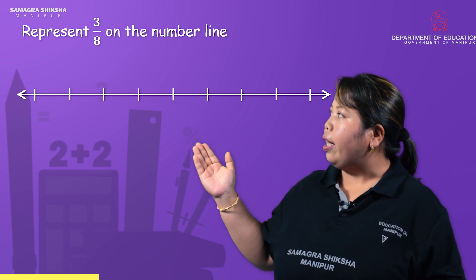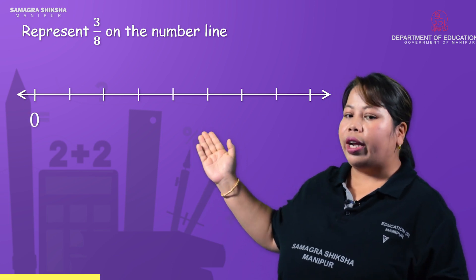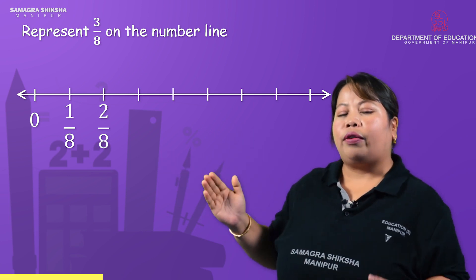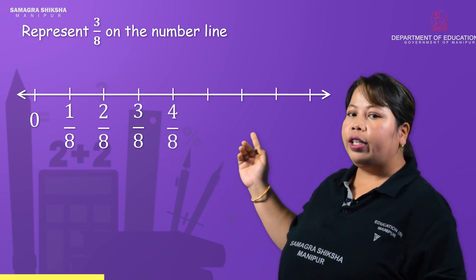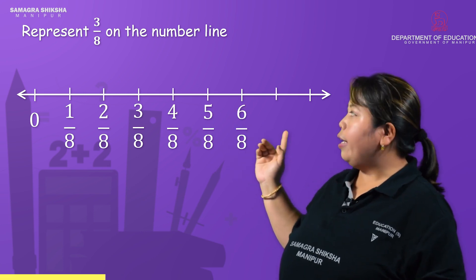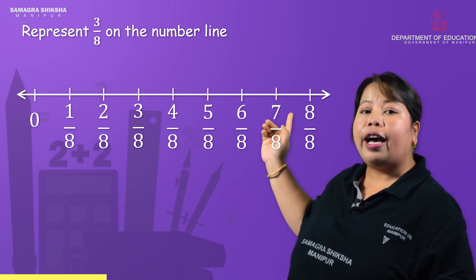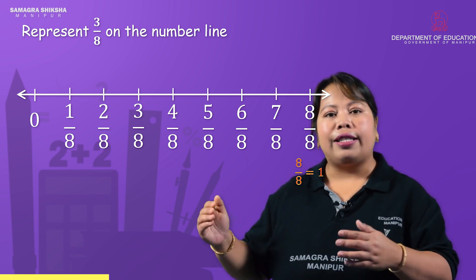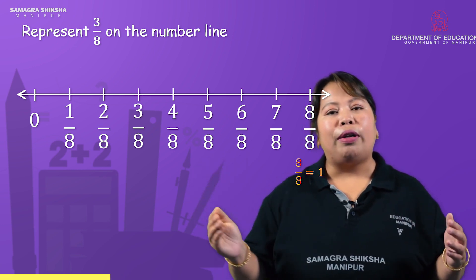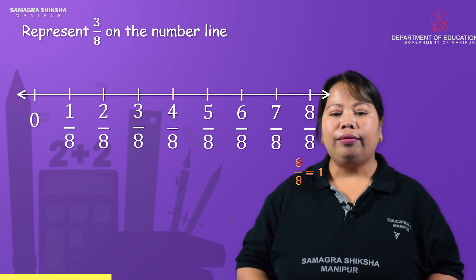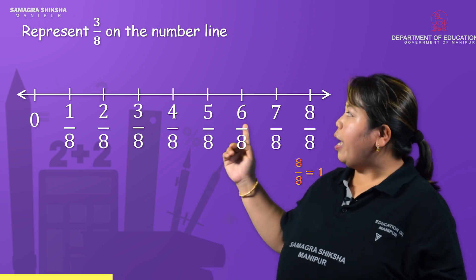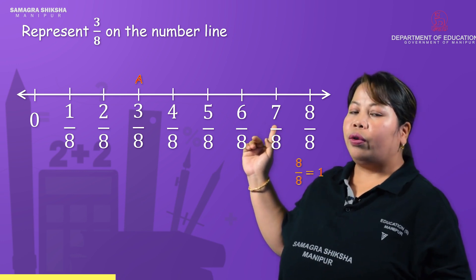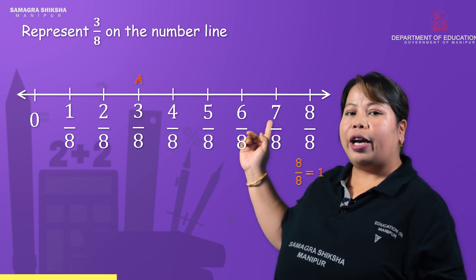We can write 0, then 1/8, 2/8, 3/8, 4/8, 5/8, 6/8, 7/8, and 8/8. Now 8/8 is equal to 1, so we write 1. Therefore, 3/8 is located at the third division from 0 on the number line.